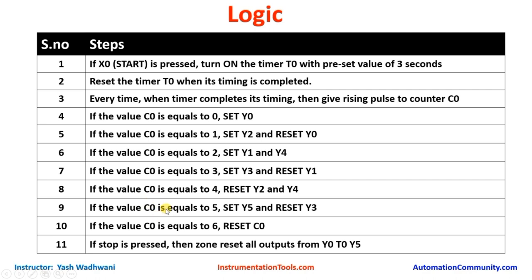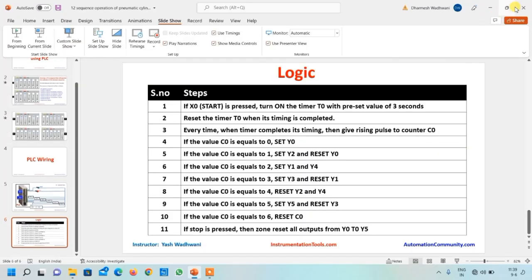Finally when C0 becomes 5, we set Y5 so cylinder 6 advances and reset Y3 so cylinder 4 retracts. When C0 becomes 6, it resets itself so C0 goes back to 0 and the sequence repeats, and we also reset Y5 so cylinder 6 comes back to its original position. If the user presses the stop button, we use the zone reset function to reset all outputs so all cylinders come back to the retract position. That was all about the logic — let us start programming.